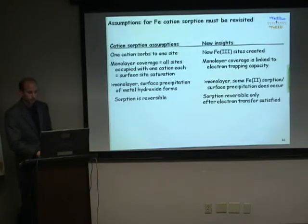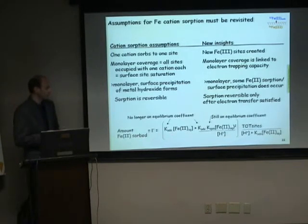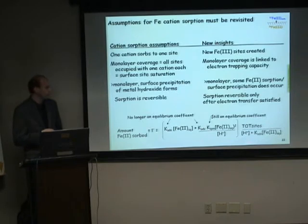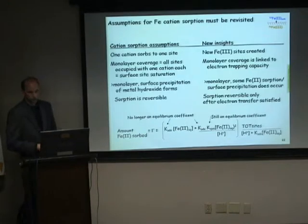Just to give an example of how these new assumptions can be placed into models — this is one model given by Farlage, Zombeck, and Morrell for surface site sorption. What we'd like to contribute is that these equilibrium coefficients can be changed: this is still an equilibrium coefficient, but these ones are no longer because of this new electron transfer process.